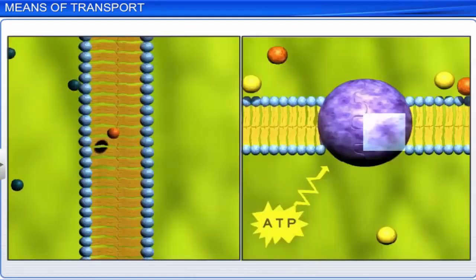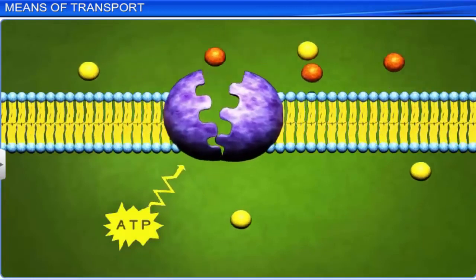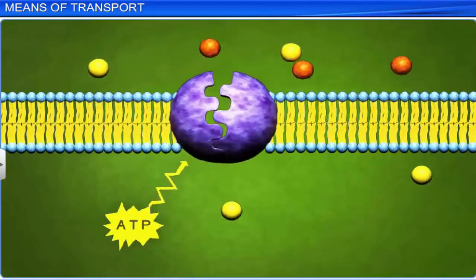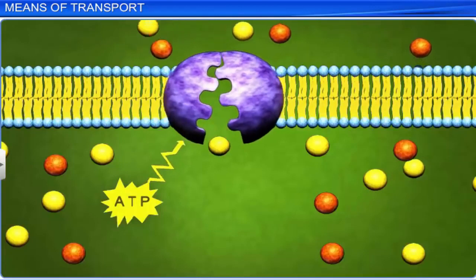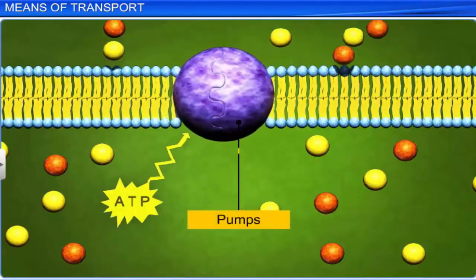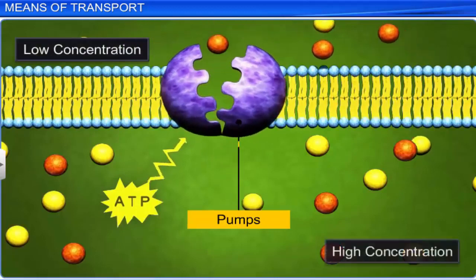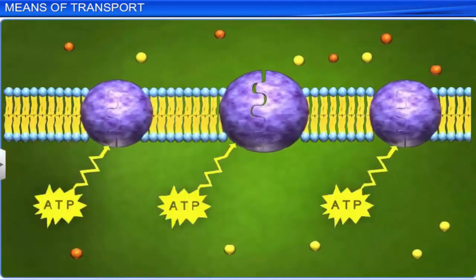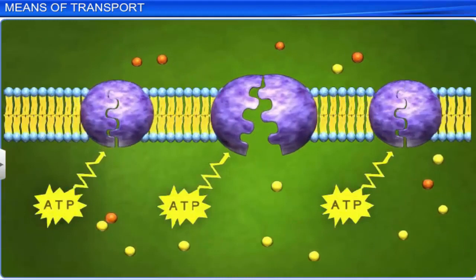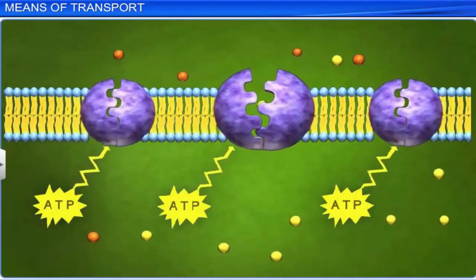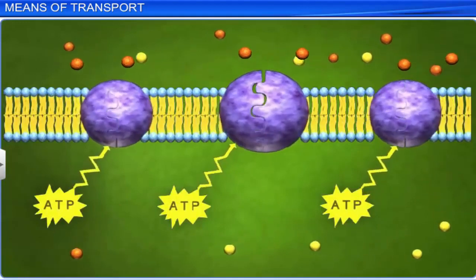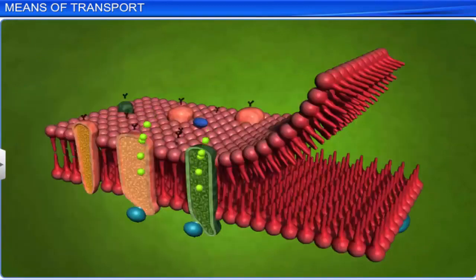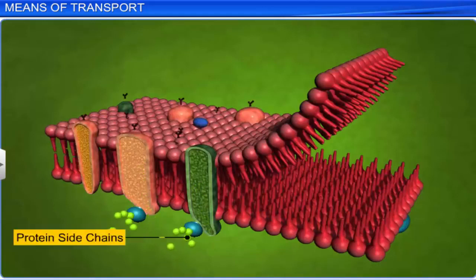Unlike diffusion, active transport requires energy to move molecules against the concentration gradient. It is carried out by membrane proteins that use energy. These proteins, called pumps, can also transport substances from low concentration to high concentration, which is referred to as uphill transport. Just like facilitated diffusion, the active transport rate is maximum when all protein transporters are being used or saturated. Also, these proteins are specific to the type of substances they carry across, and are sensitive to inhibitors that react with their protein side chains.